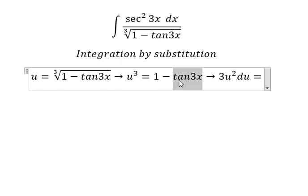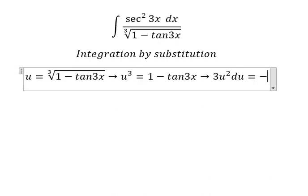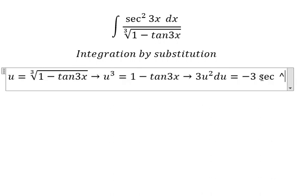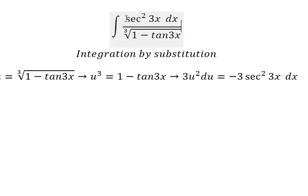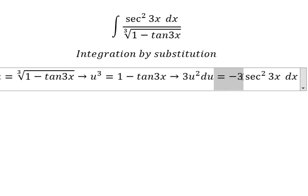First derivative of tan 3x, we have negative 3 sec squared 3x dx. Because we don't have negative 3, we need to divide by negative 3 for both sides.